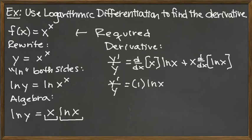So we have 1 times ln(x), plus x times the derivative of ln(x), which is 1/x. Looking at this, we've got y'/y equals ln(x), plus x times 1/x, which is just 1. The next step is multiplying both sides by y.